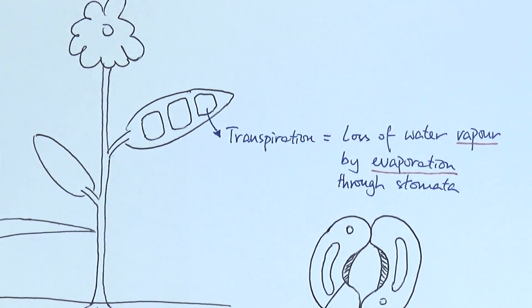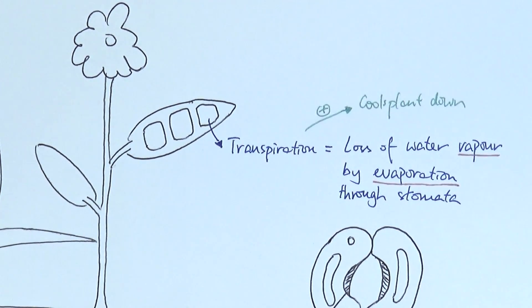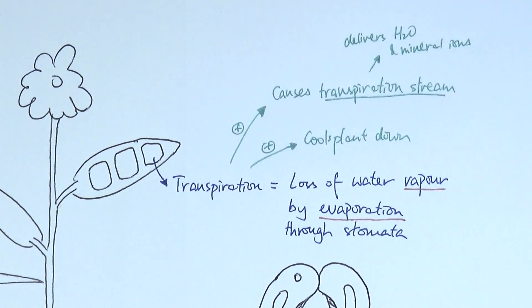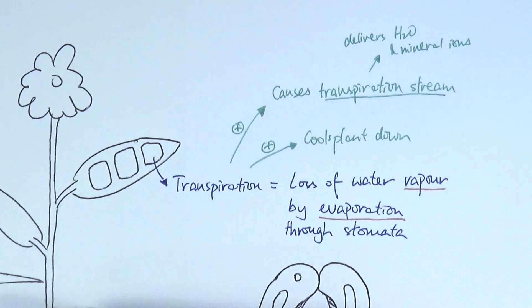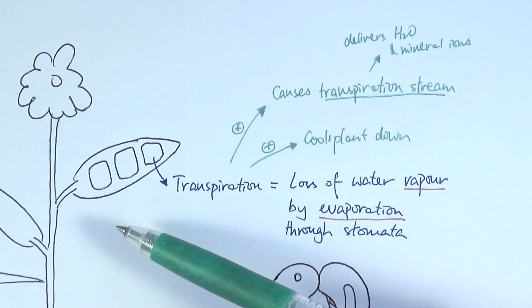There are several things that transpiration is good for. First, transpiration is kind of like sweating in plants — it cools the plant down. By the loss of water vapor, the water molecules absorb heat, gain kinetic energy, and diffuse out of the stomata. Another benefit is that it causes the transpiration stream — the movement of water and mineral ions up the stem through the xylem from the roots.